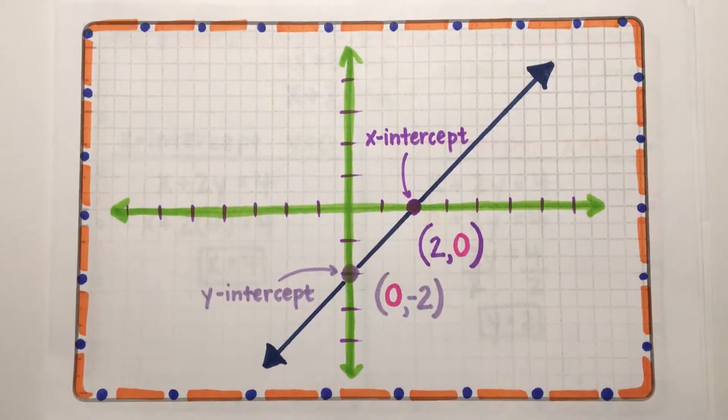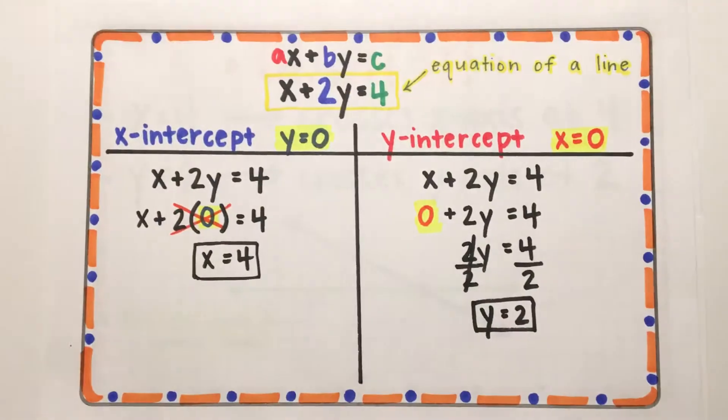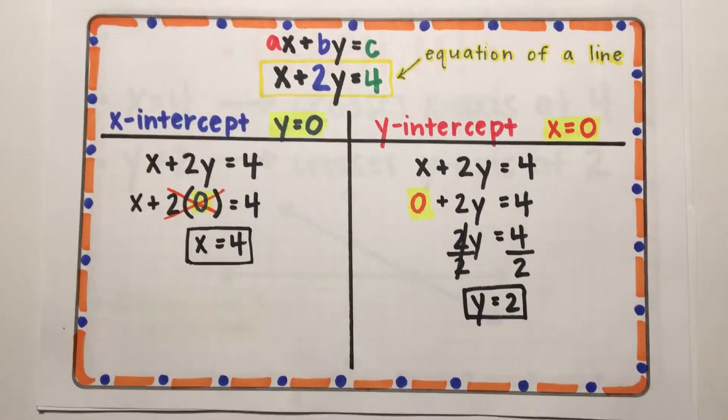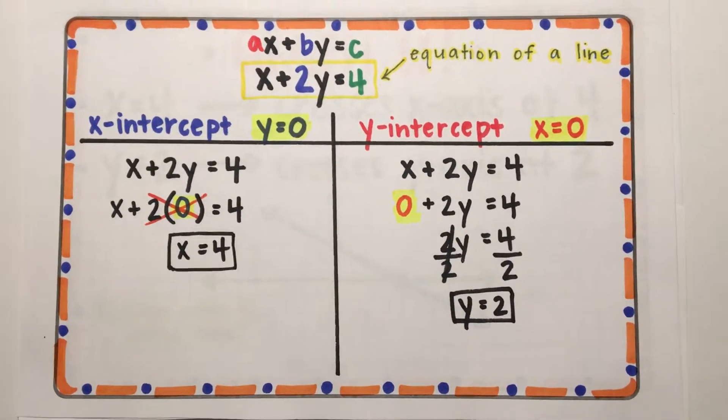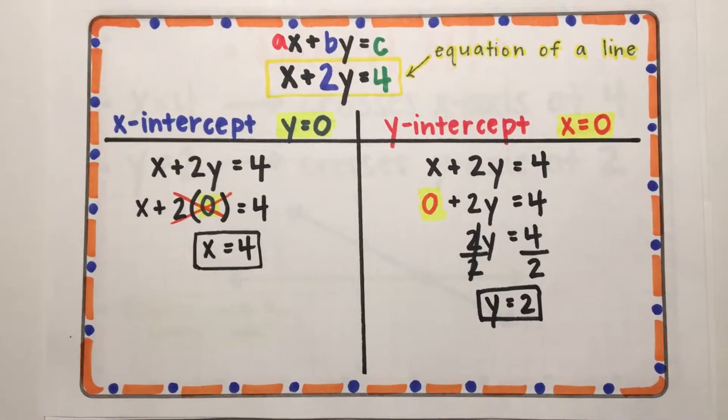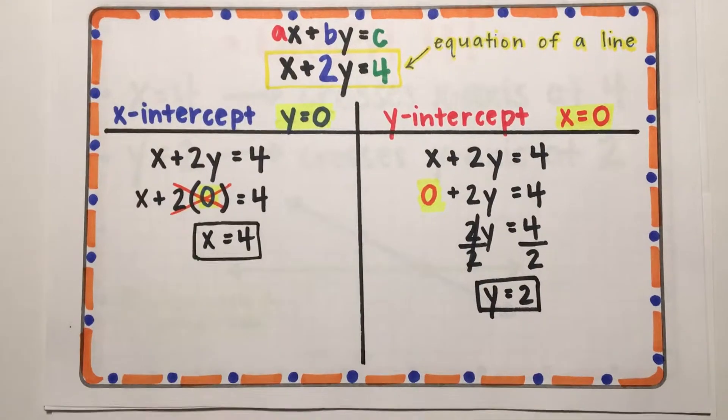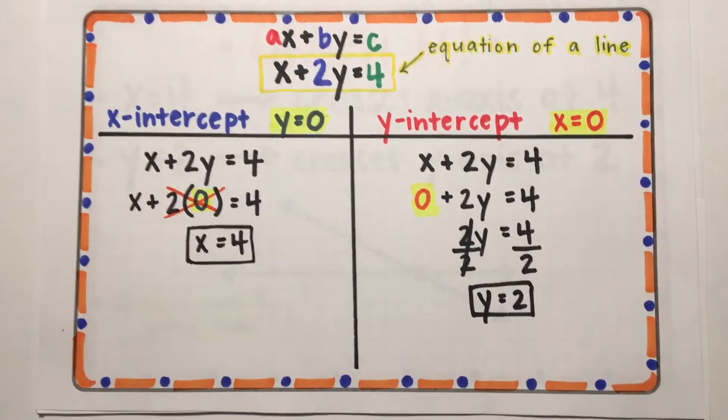Now let's calculate these intercepts. Let's start with an equation in standard form, ax plus by equals c. Remember, every x-intercept has a y-value of 0, and every y-intercept has an x-value of 0.